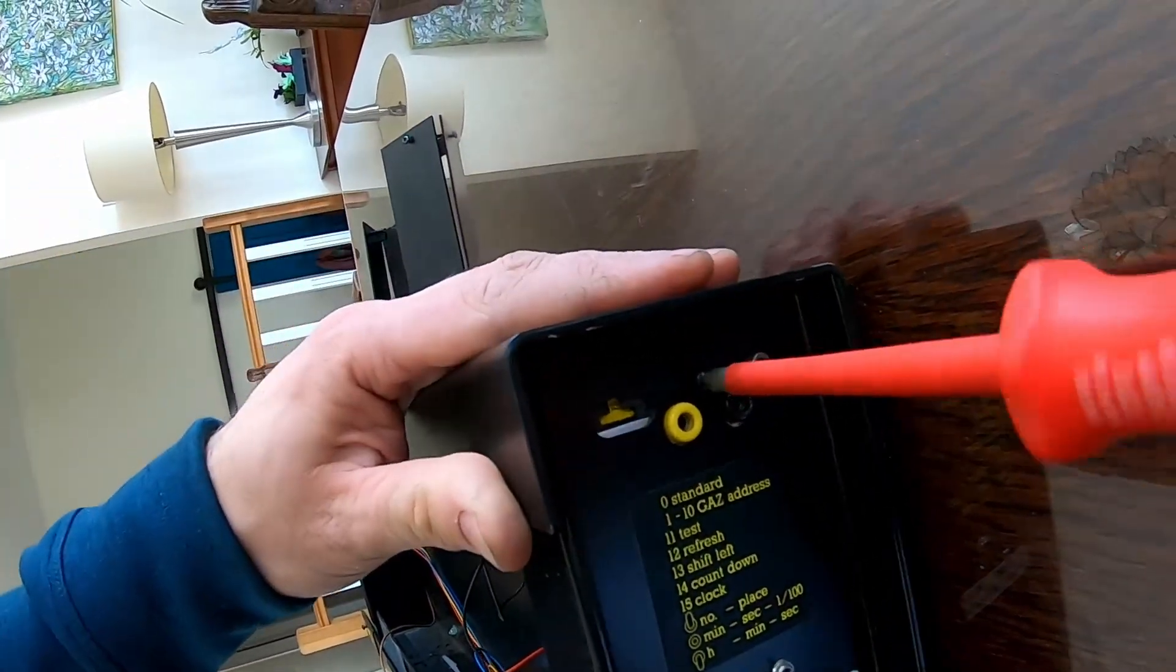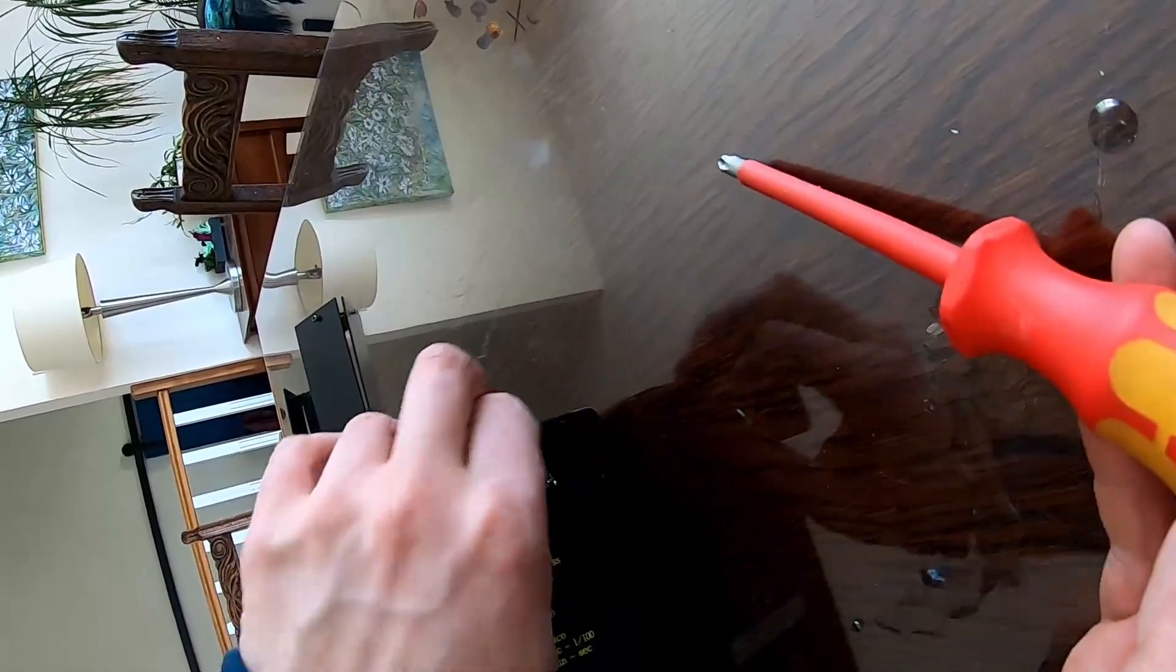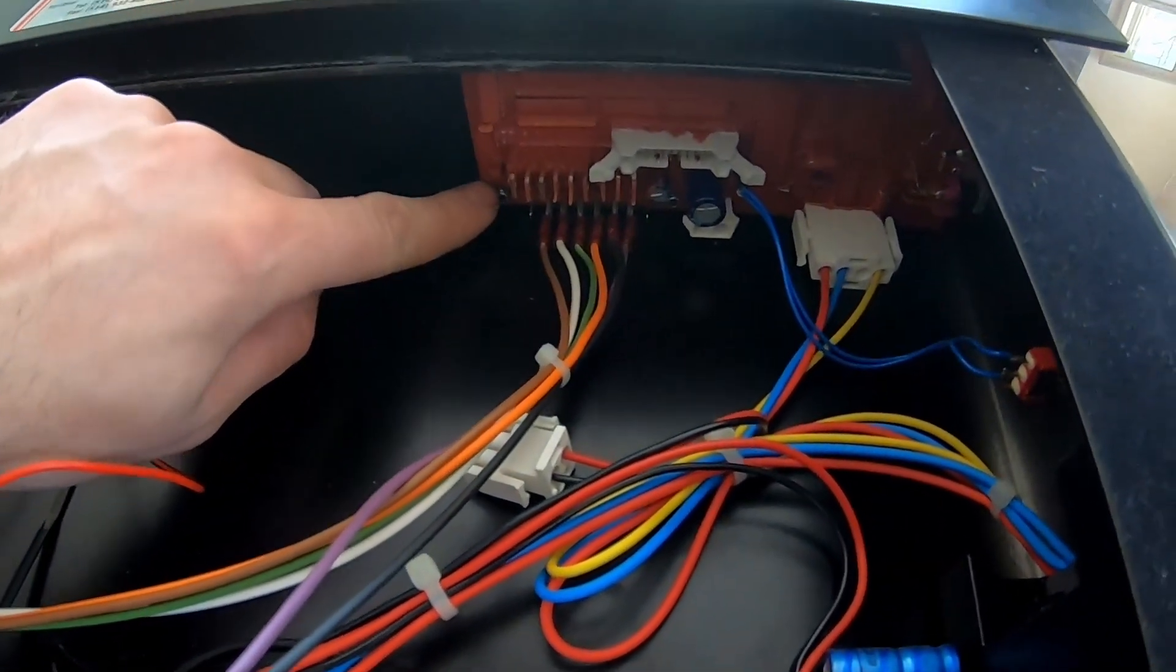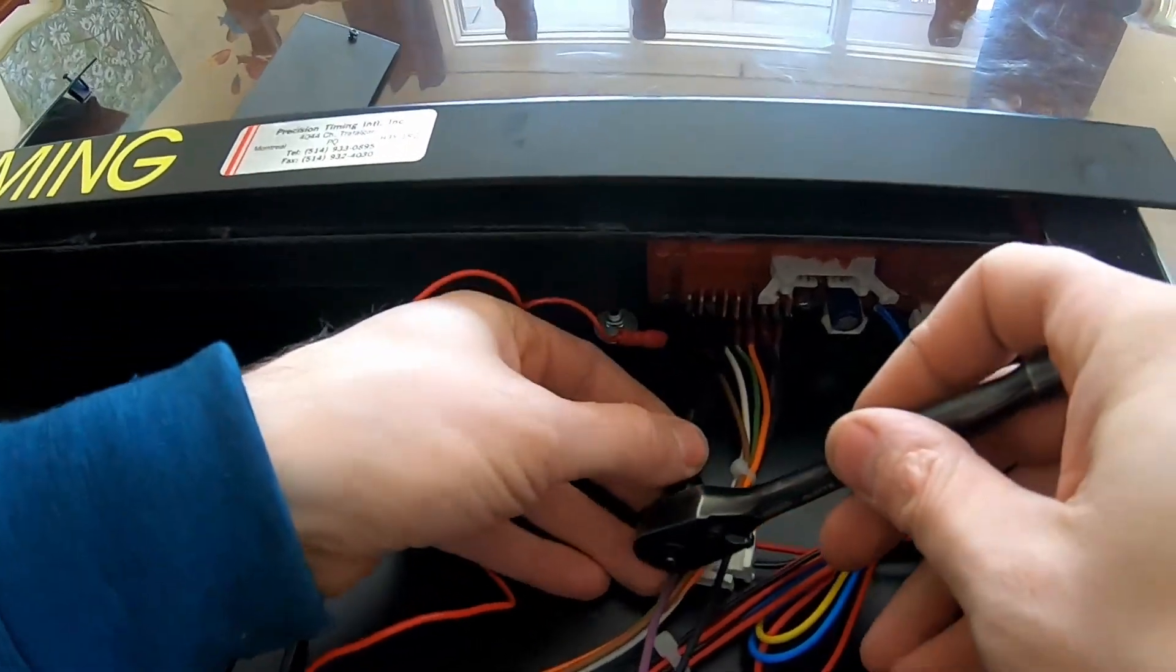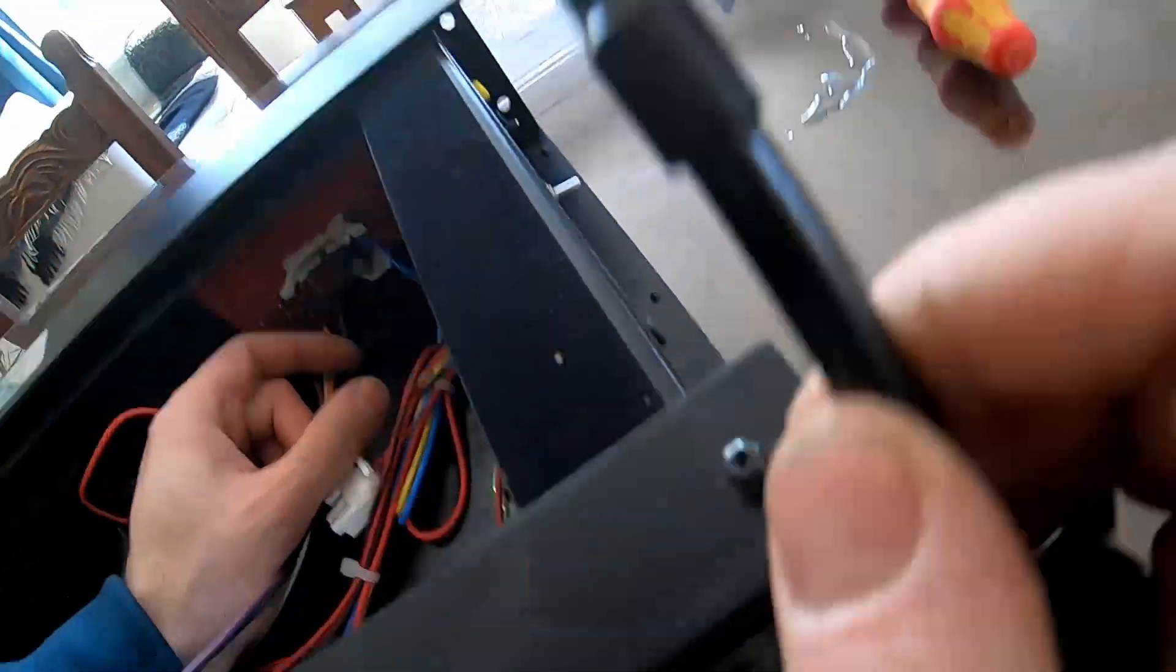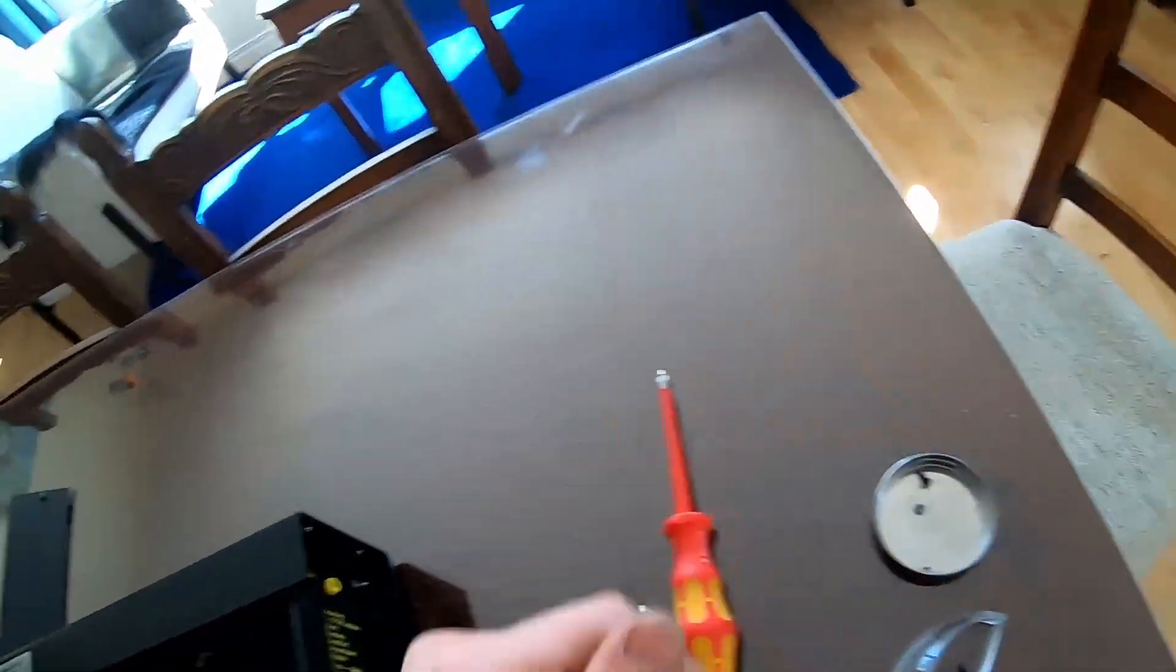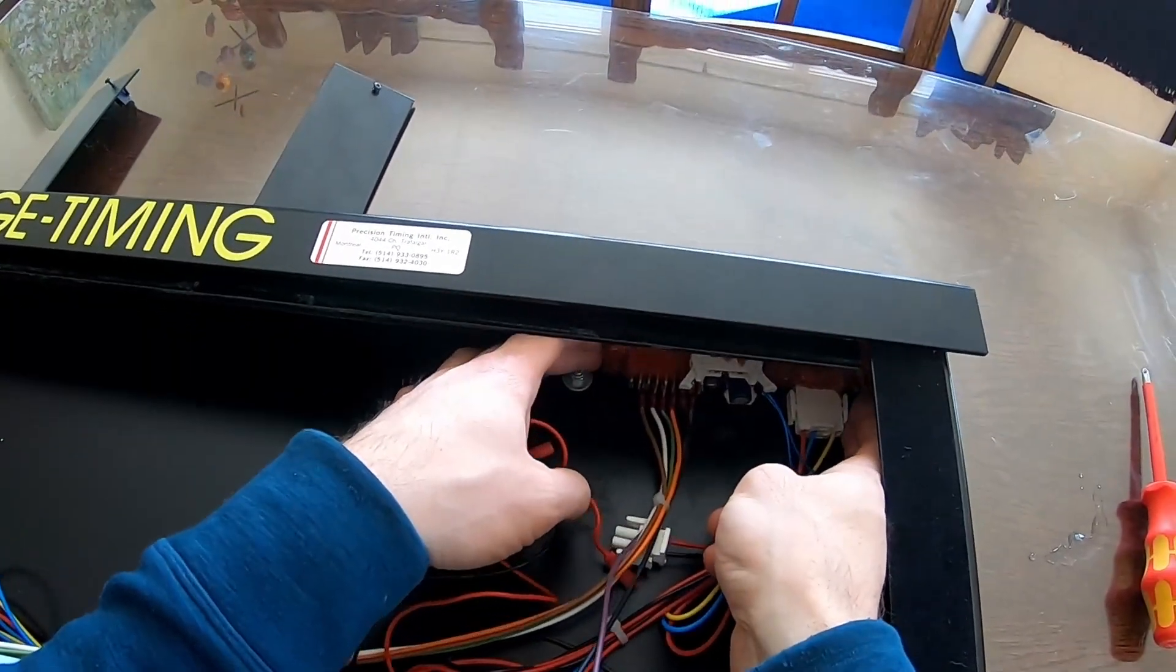First we're gonna take off this screw right here. Then on the inside you'll see there's two small nuts that are holding the board on. These are seven thirty seconds. I find it's easier if you use an extension. It's also easier to take this one off first.